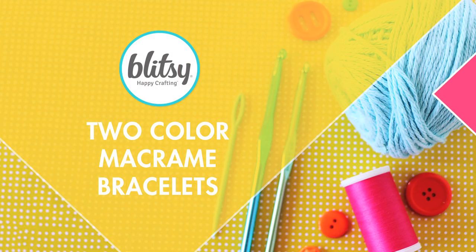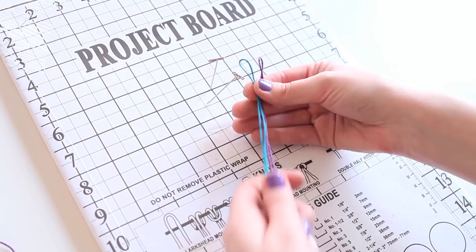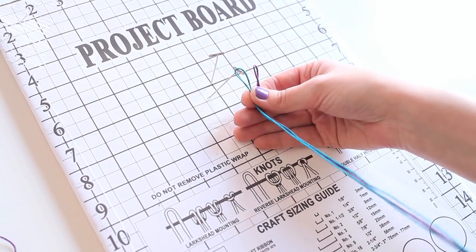Hey everybody, this is Heidi for Blitzy and in today's video I'm going to walk you through how to make fun and easy two color macrame bracelets. In front of me here I've got two pieces of hemp cord that are about four feet long.